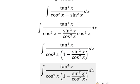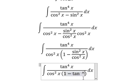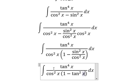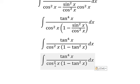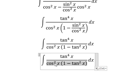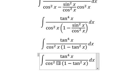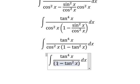So sine x divided by cosine x, we have tan x squared. Next, 1 divided by cosine x squared, we will have about secant of x squared in here.